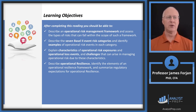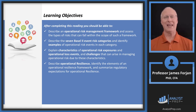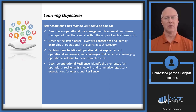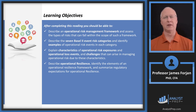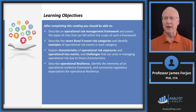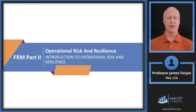So what are we going to do in this first introductory reading? We're going to describe operational risk management and its framework. We'll talk about the work that went on in Basel. Then we'll talk about some characteristics. And then notice the last one is really the second part of this reading: resilience.